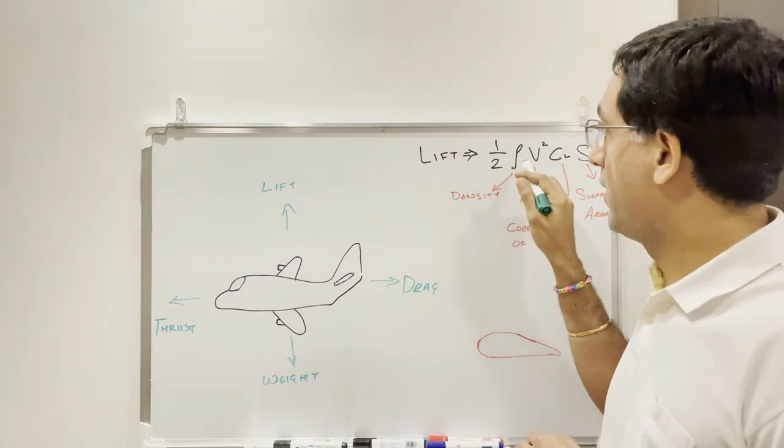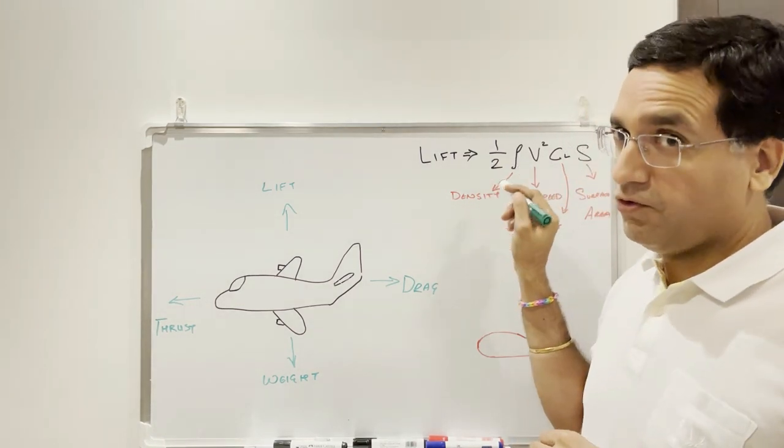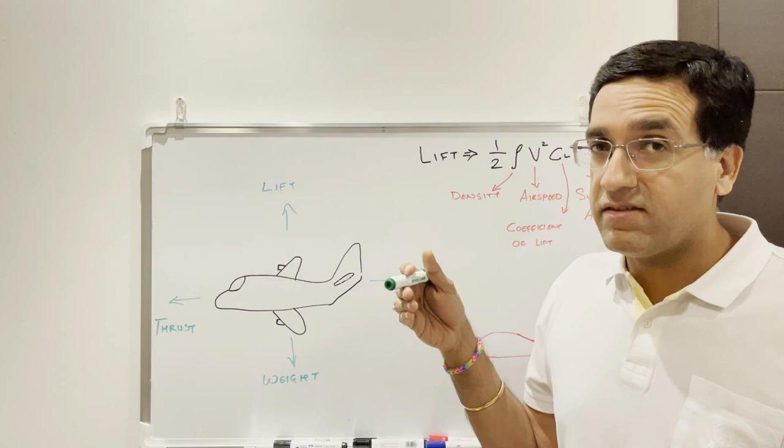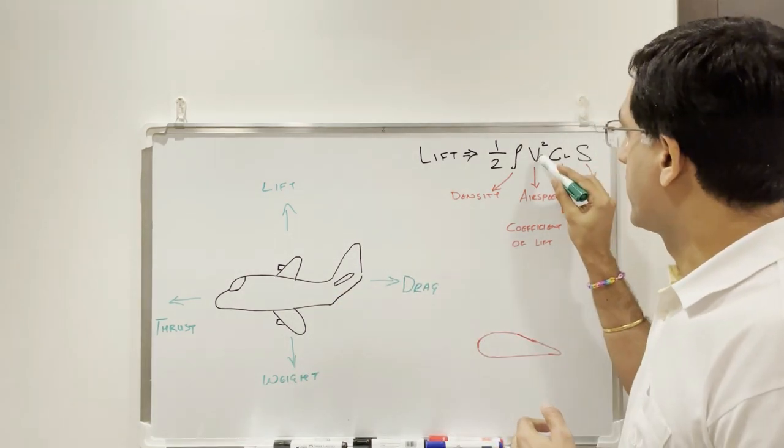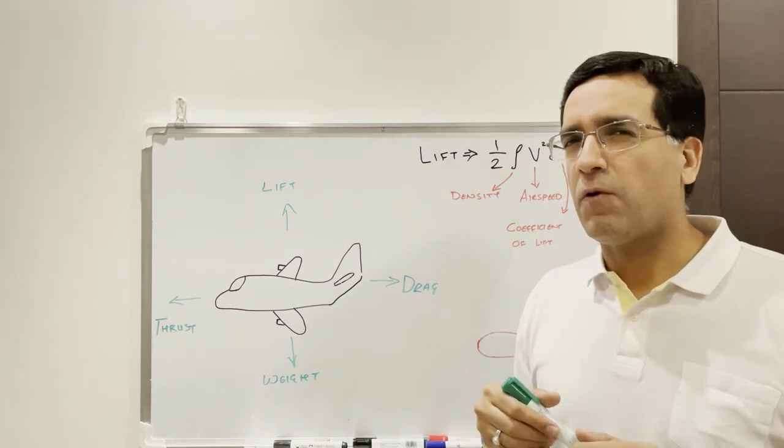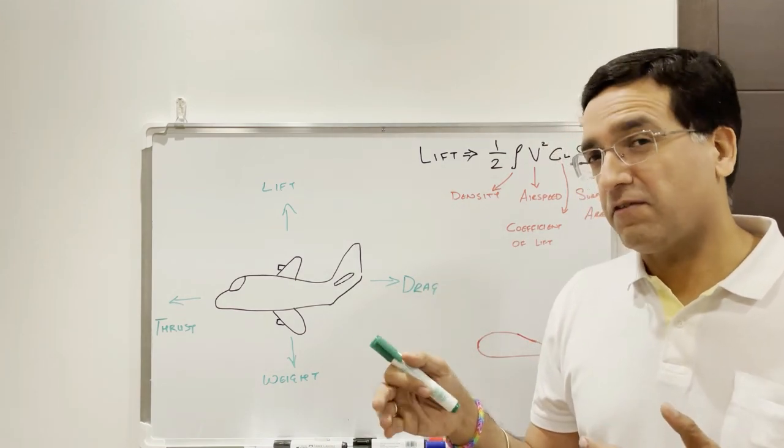So it's half multiplied by rho, which represents the air density, so the density of the air around the aircraft. V square, V stands for velocity, so the speed of the aircraft, square of that.